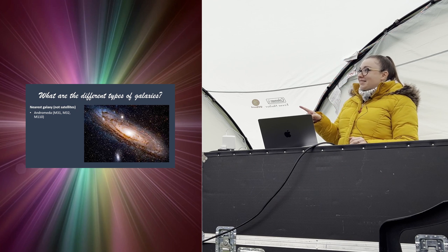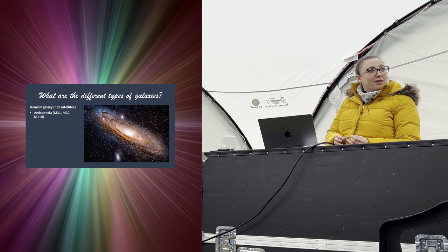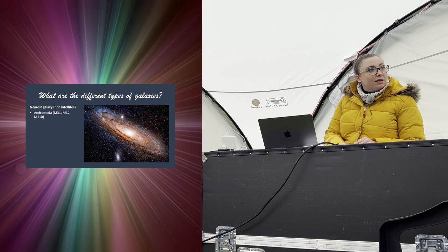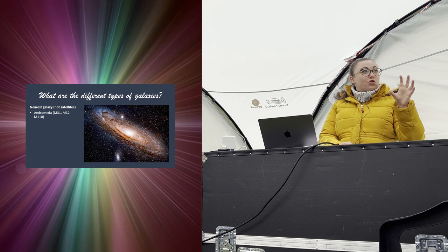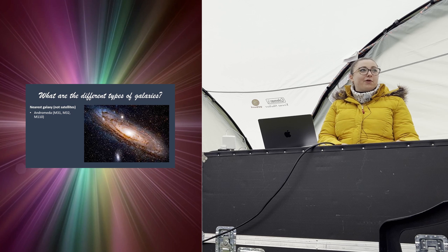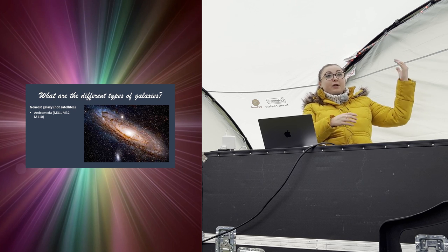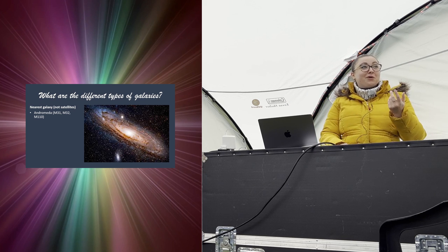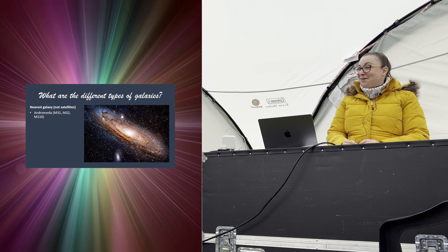Our nearest galaxy is Andromeda, also a spiral. There are stars that exist outside of galaxies — they can be flung out during mergers, for example, and then just exist on their own, wandering through intergalactic space. But detecting those stars on their own is very, very difficult.